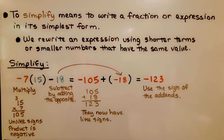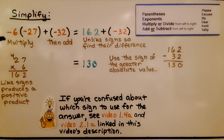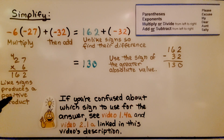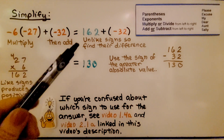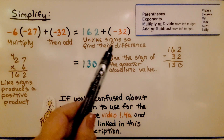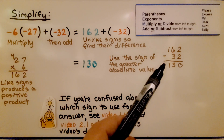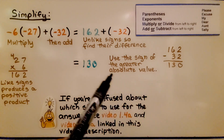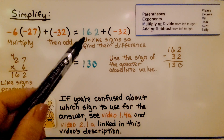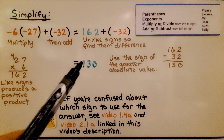Here we need to simplify negative 6 multiplied by negative 27 plus negative 32. According to the order of operations, we multiply first. They have like signs, so the product is positive. 6 times 27 is 162; we have positive 162. Then we add negative 32. Positive 162 and negative 32 have unlike signs, so we find the difference of their absolute values: 162 minus 32 is 130. We use the sign of the greater absolute value — 162 is farther from zero and it's positive — so our sum is positive 130.